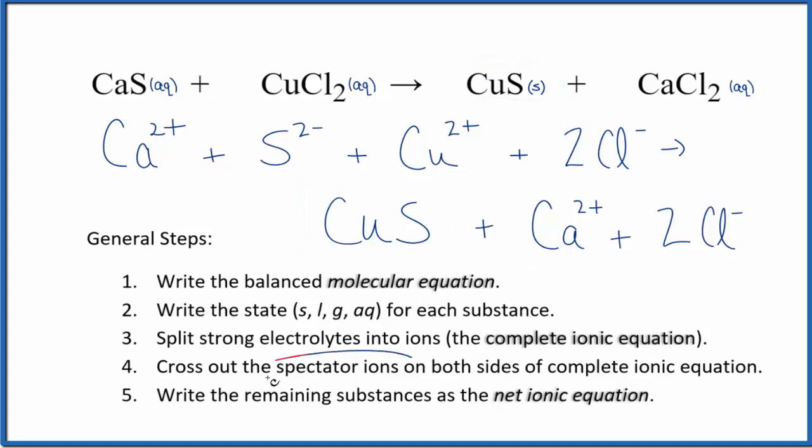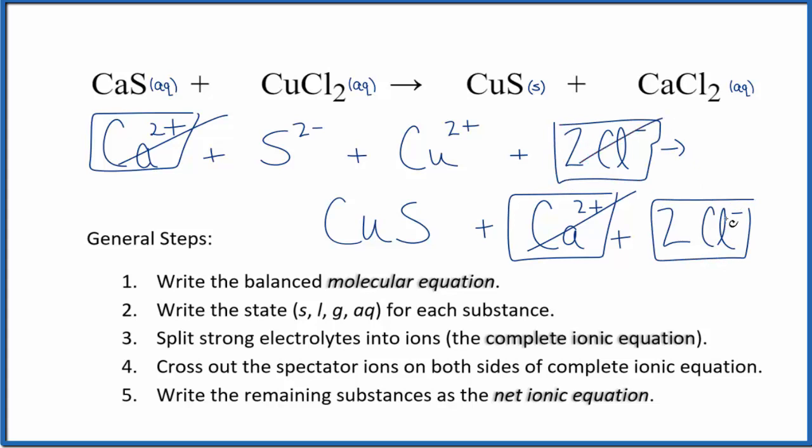At this point, we can cross out the spectator ions. They're on both sides. In the reactants up here, I see we have a calcium ion. We also have that in the products. That's a spectator ion. Let's cross that out, and two chloride ions in the reactants and the products. Those are spectator ions. We cross them out.